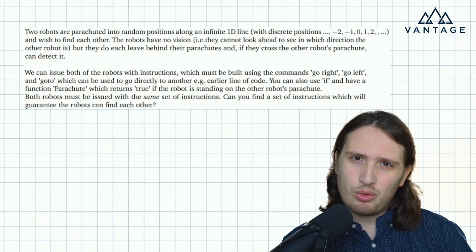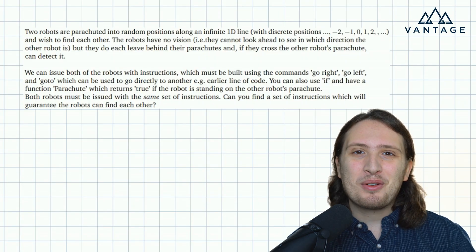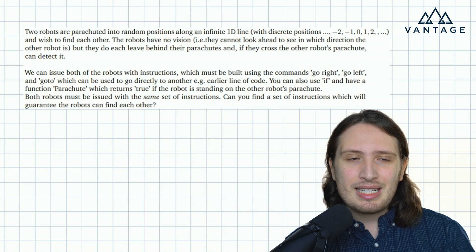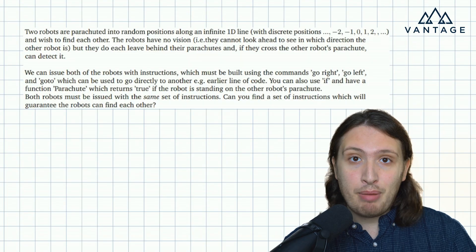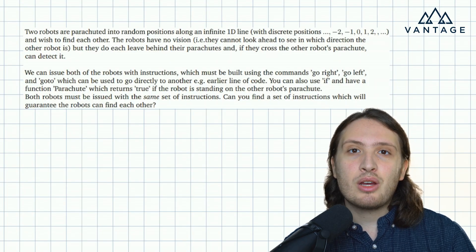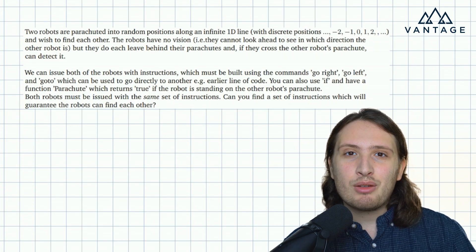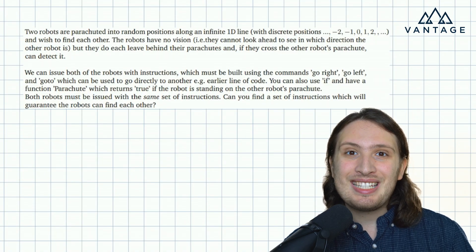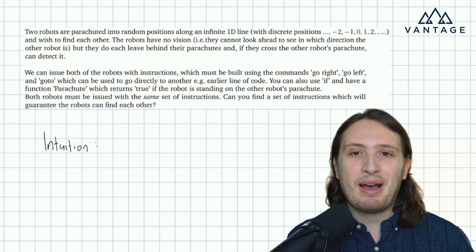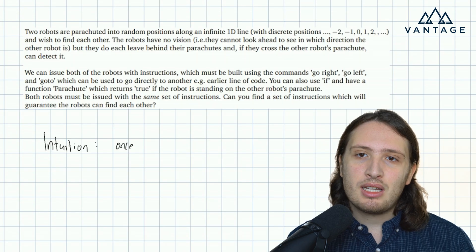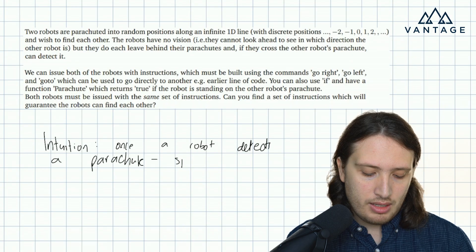How can we overcome the fact that we have to give them the same instructions? There's one feature of the problem we haven't really thought about using yet: the parachute. The robots do have an ability to detect the parachute. We should always formulate our algorithms intuitively before we start to code them. Intuitively, it makes sense to say: once a robot finds a parachute, it should speed up. If I construct things so that the robot speeds up once it meets the other robot's parachute, then the robot that started to the left will catch up — and eventually they'll meet.